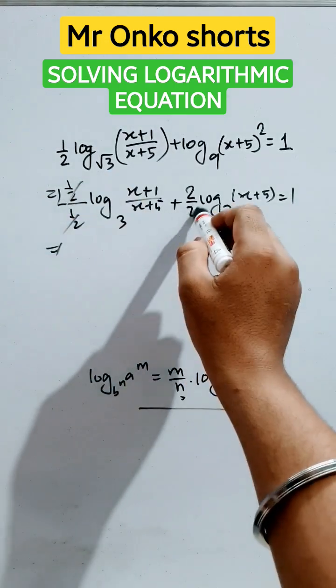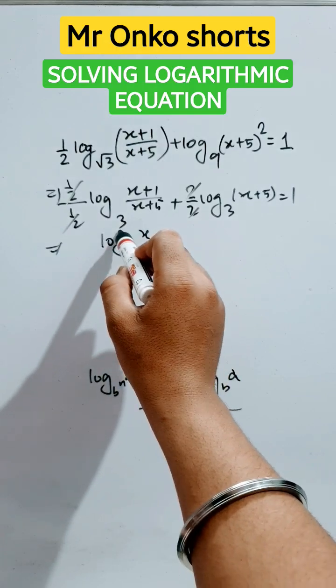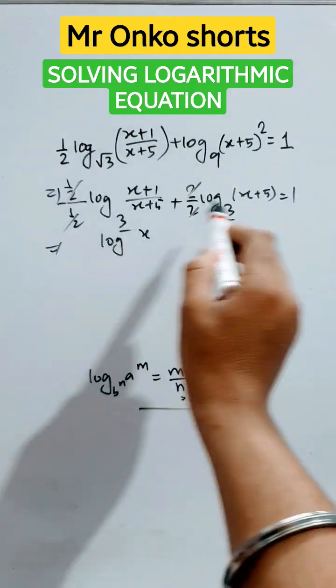Now this is omitted and this is omitted. It will be logarithm to base 3 and 3 here. Same base plus.